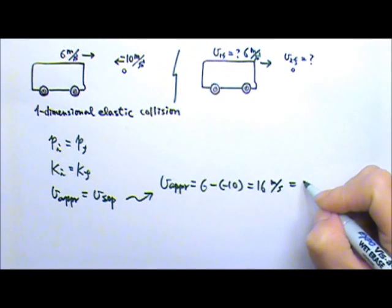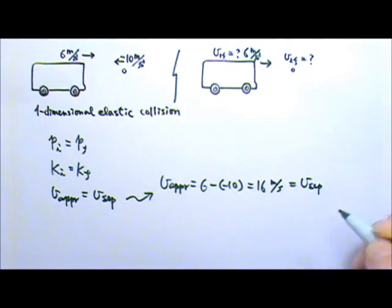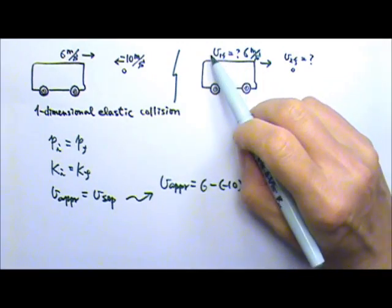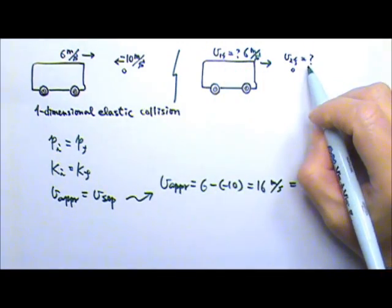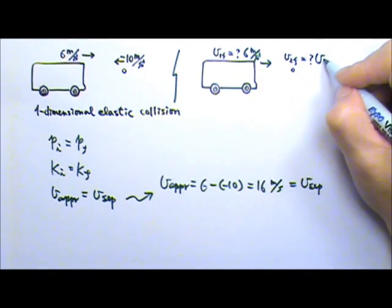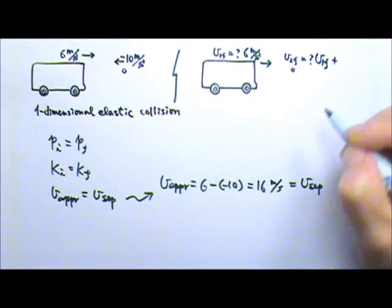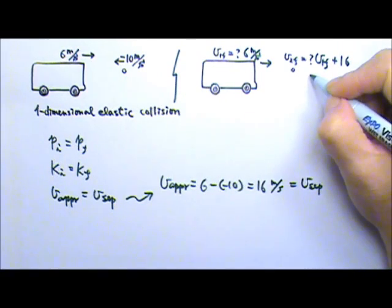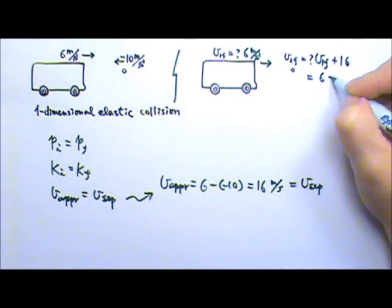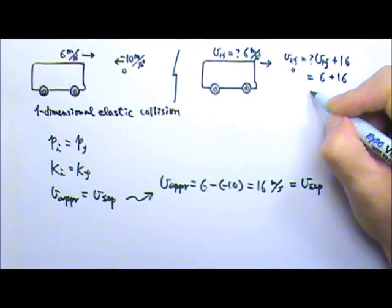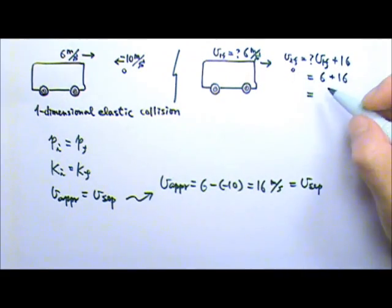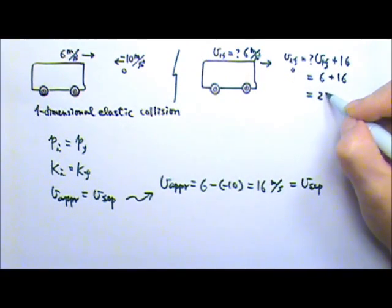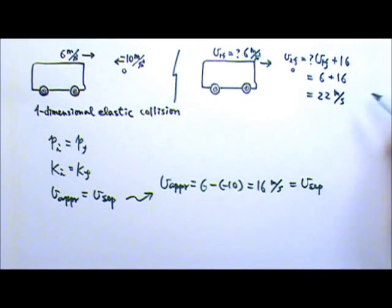That means the separating speed must also be 16 meters per second. So if this one moves at V1F, then V2F must be V1F plus 16. And the V1F equals to 6, so if we add 16 to it, the ping-pong ball must have a final velocity that is 22 meters per second.